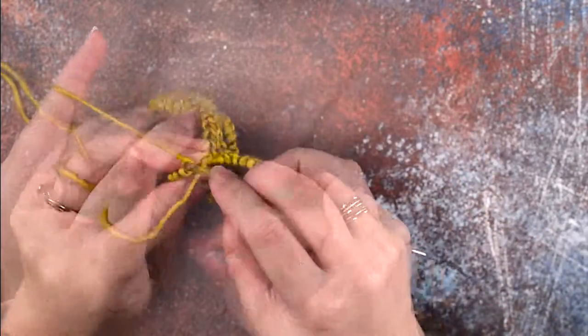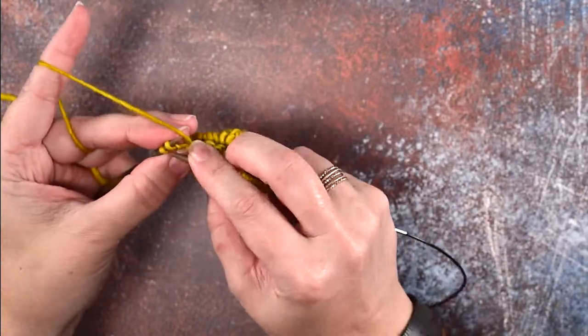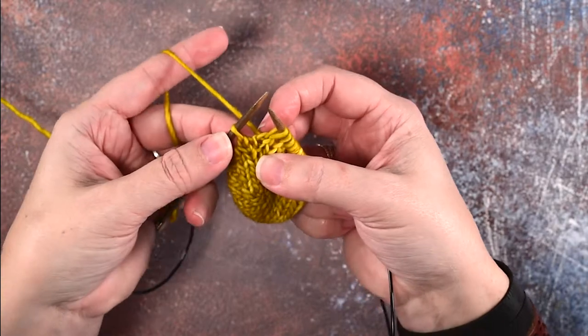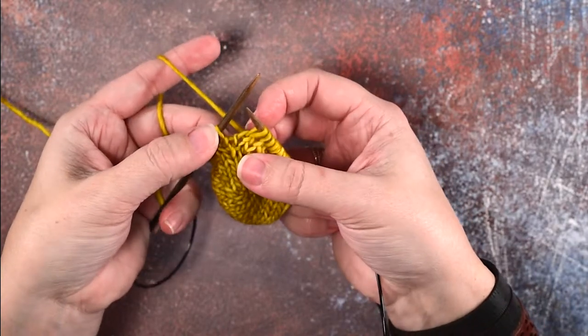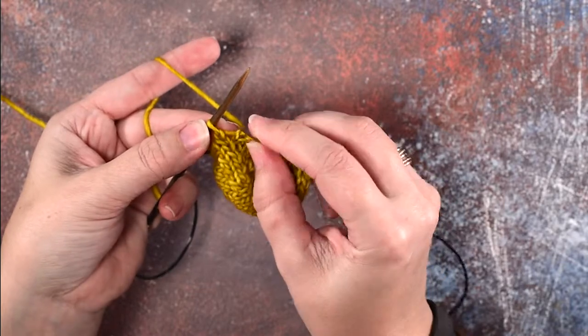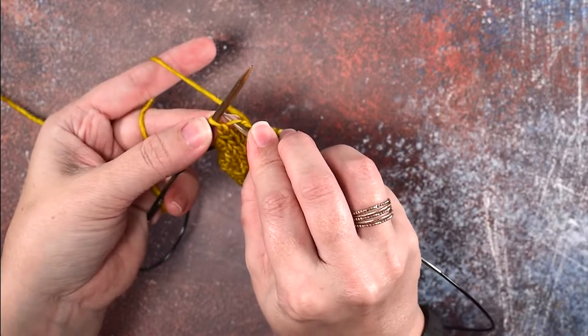Okay, so I've worked over to where I'm gonna place my next make one right, just before this last stitch on my needle. We've located the bar here. We're gonna use our right needle tip, front to back, to pick up that bar.